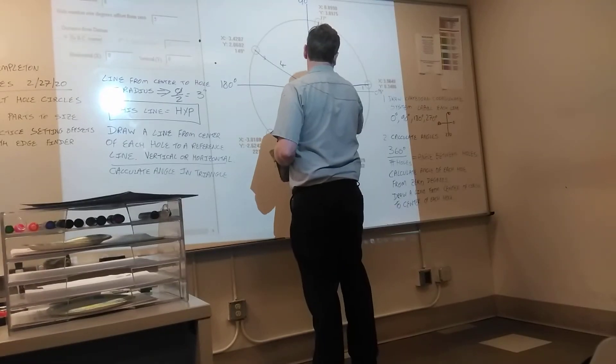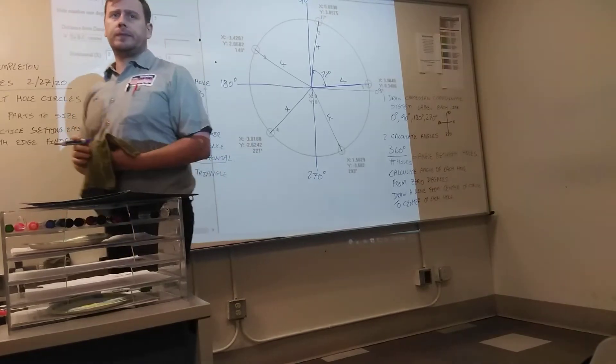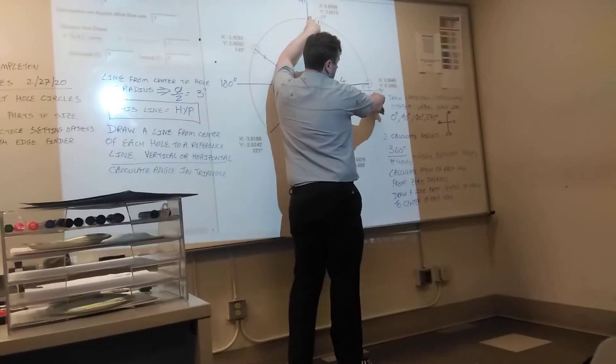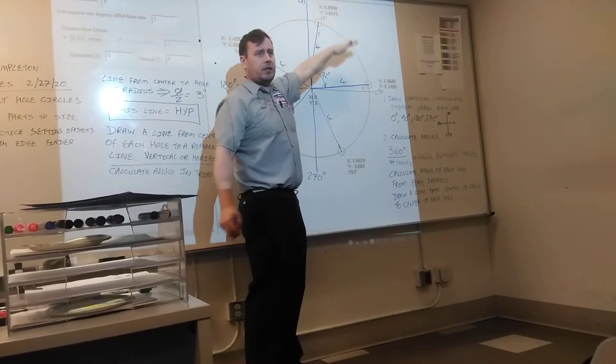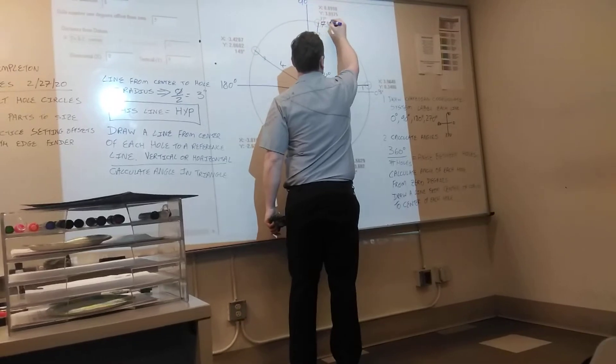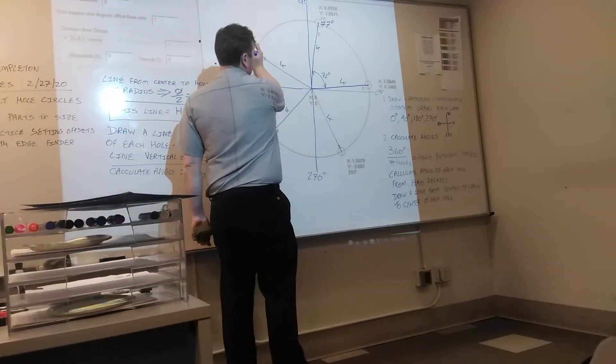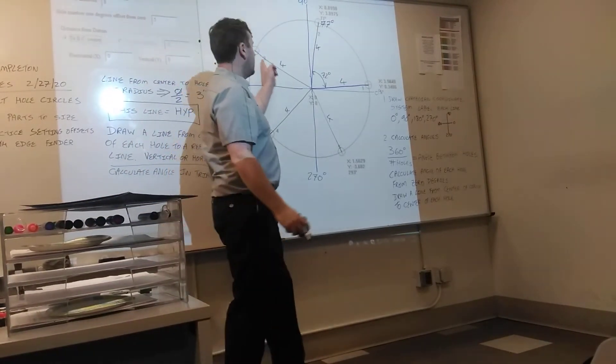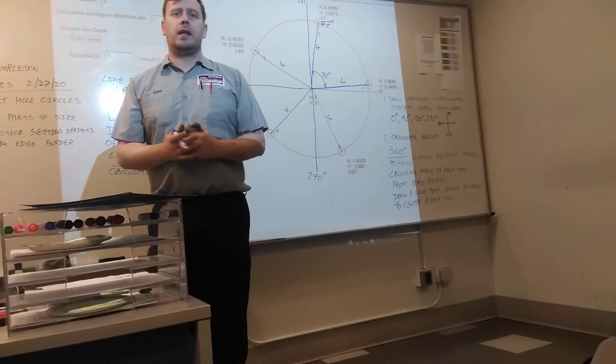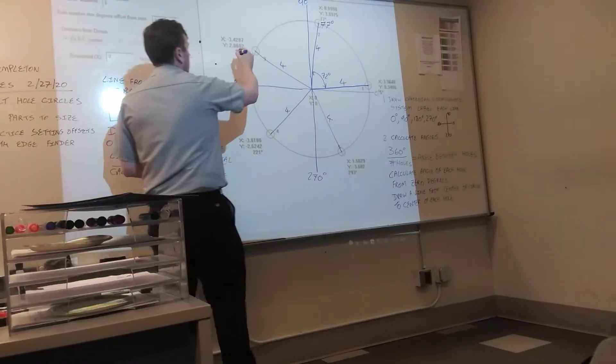So from hole number one to hole number two is seventy-two degrees. So how far is hole number two from zero? Seventy-two plus five. Seventy-seven degrees. How far is it from hole three to zero? Seventy-two, seventy-two, and then five. That gives us 149 degrees.